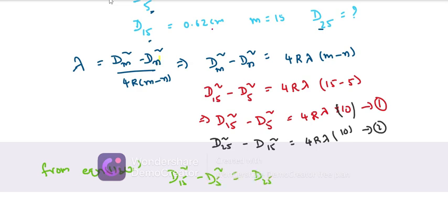Rearranging to solve for D₂₅²: D₂₅² = D₁₅² + (D₁₅² - D₅²) = 2D₁₅² - D₅². Now we substitute the values.